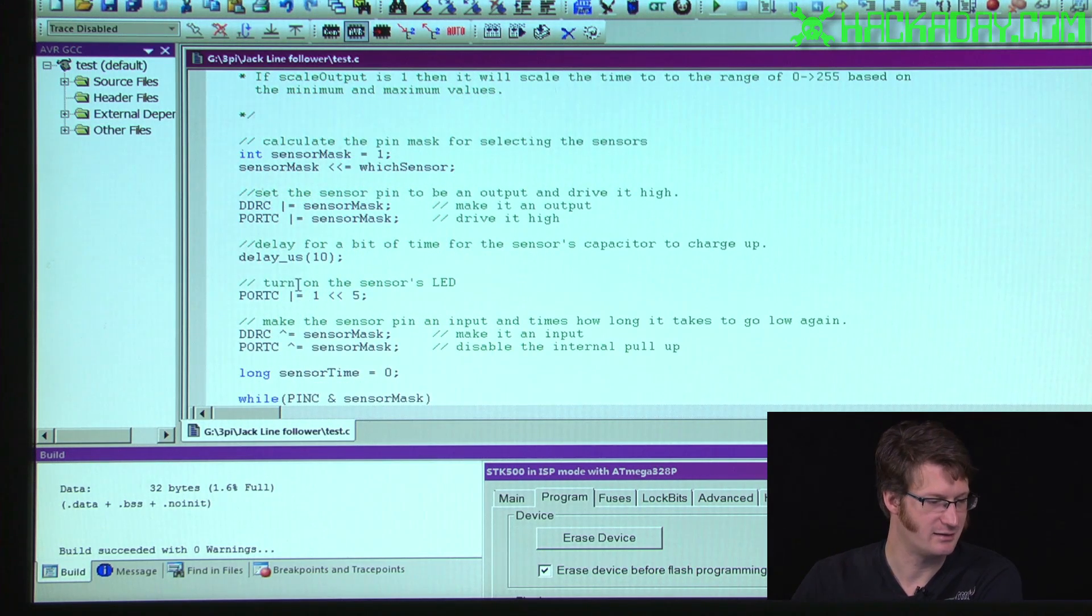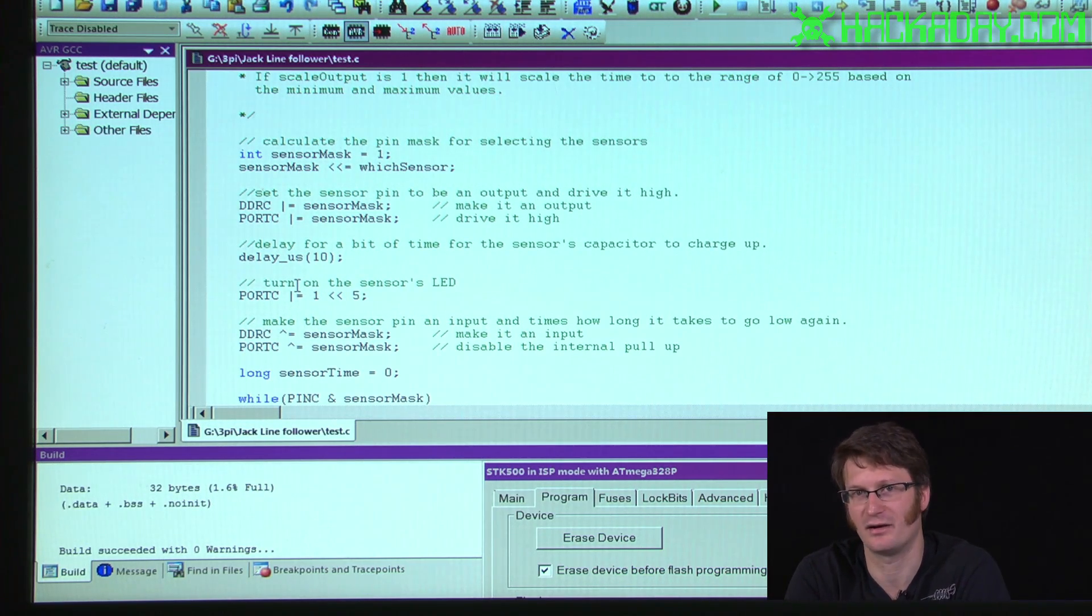And then I turn on the sensor's LED. Now this sensor would probably work without that LED on, but you'll have much more sensitivity with it on. Because otherwise you're relying on ambient light and depending on whether you've gone into a shadow or something like that, it could change your results. So you'll have much better readings if you have that LED on.